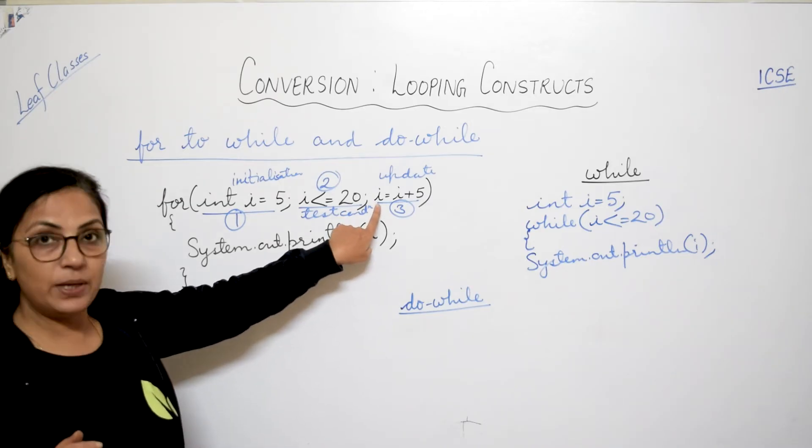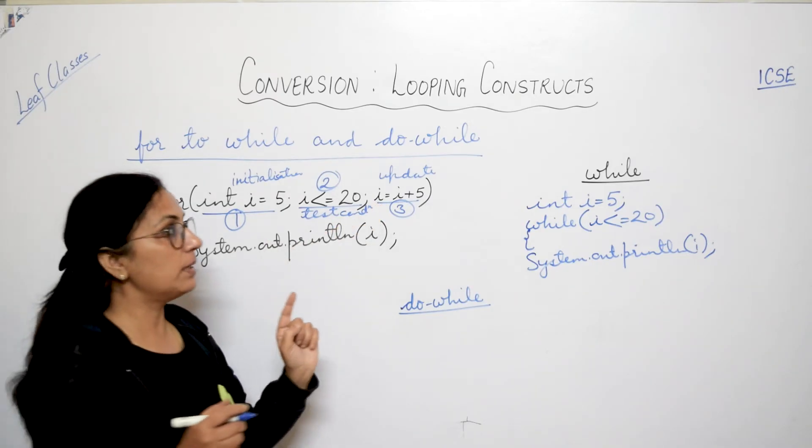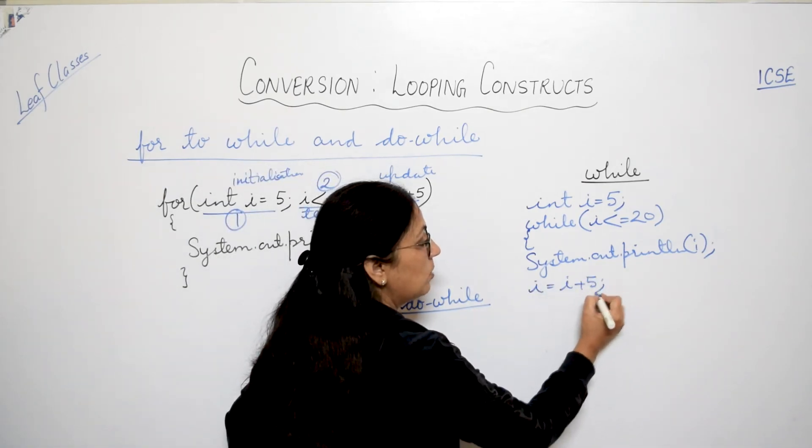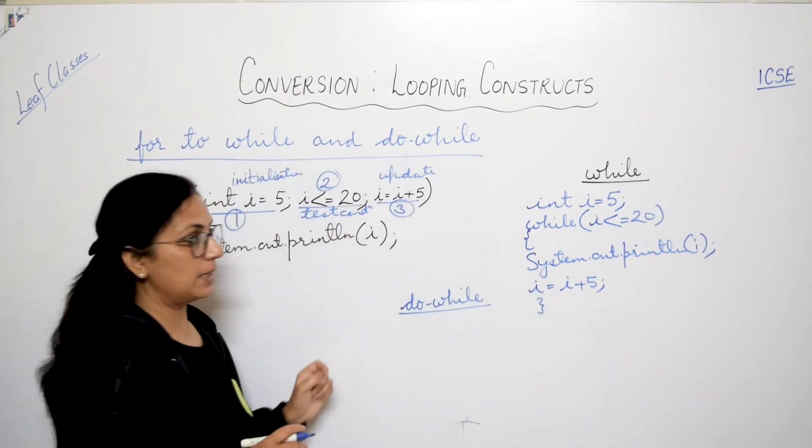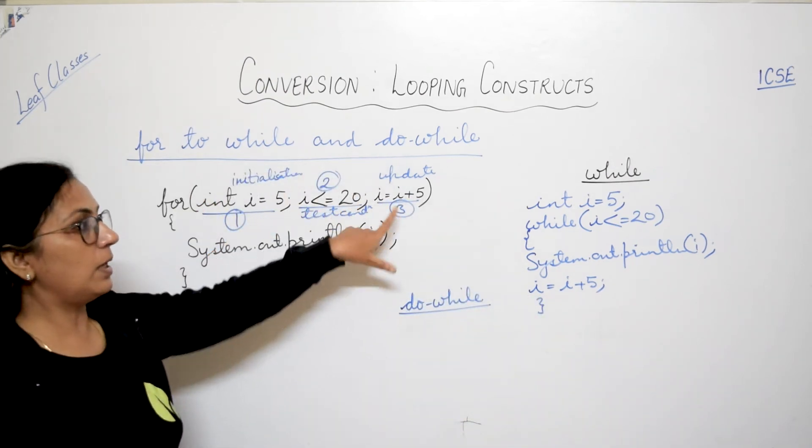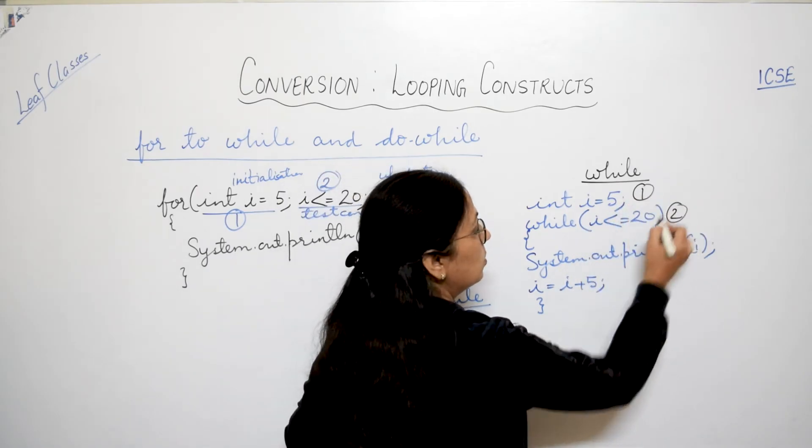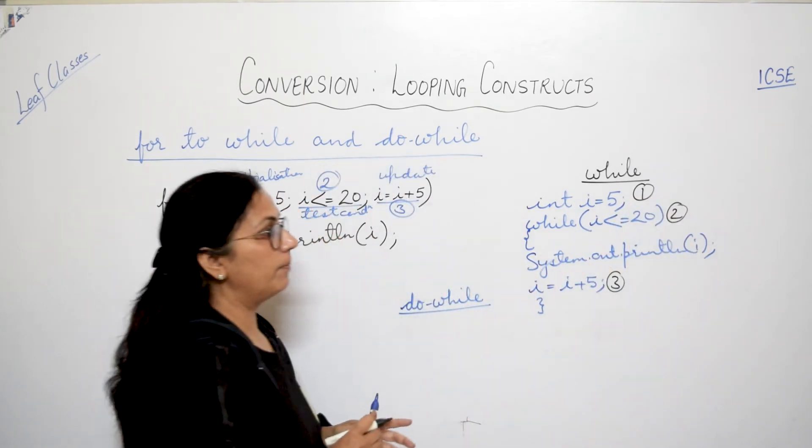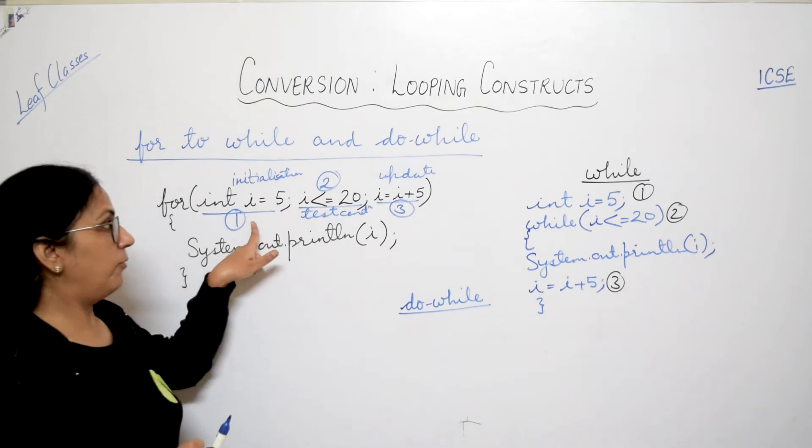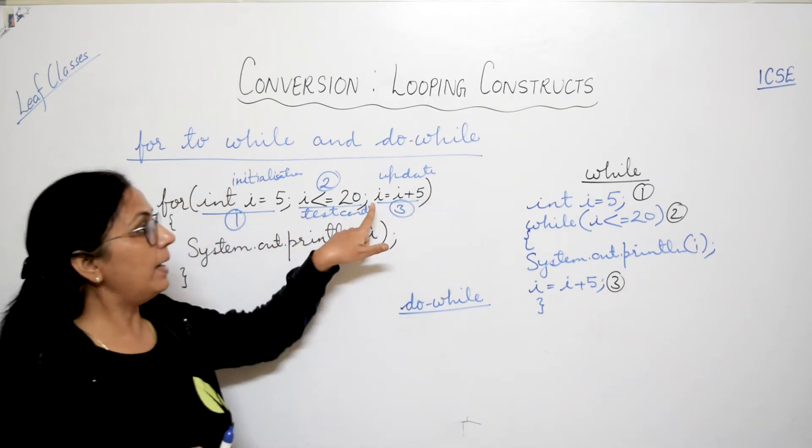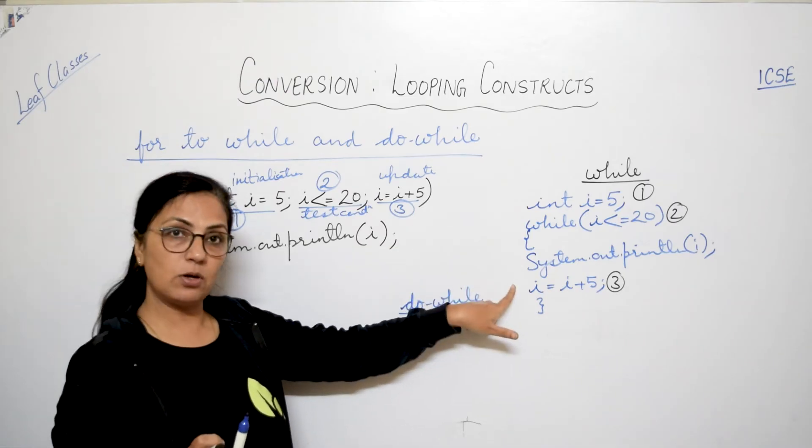After this kya karoge? Iska update expression. Before closing the while loop you will write the update expression i equals to i plus 5, like in this case. Now children I told you 1, 2, 3 yad rakhoghe. Yaha par kya hogha? 1, 2, 3 yaha par hongha. So please check. First wala before the loop, second with while, and third is before closing of this.